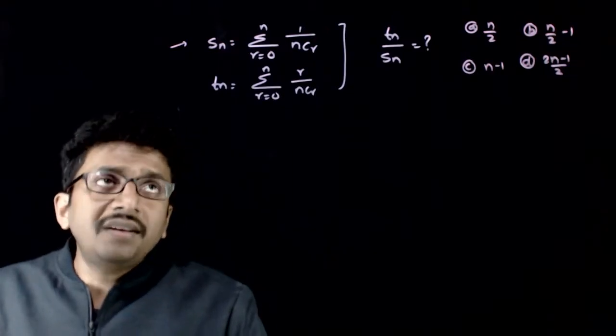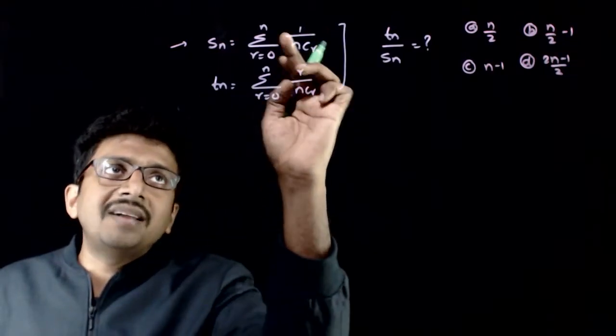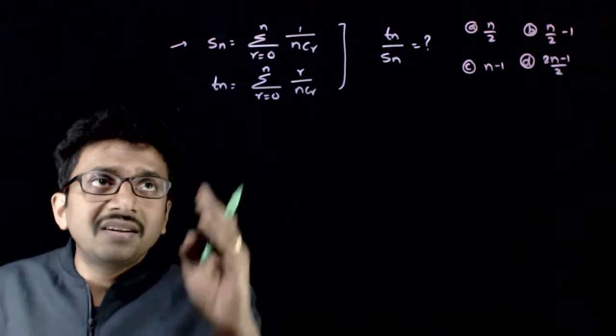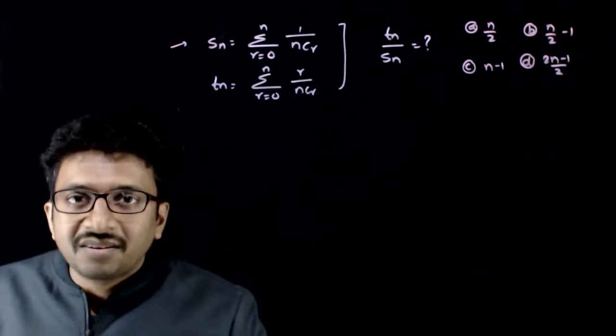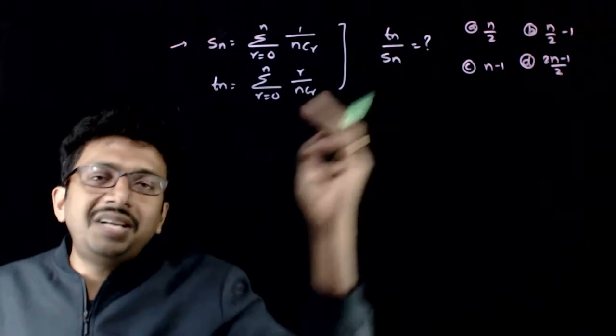Welcome students. In this question, you have given that Sn is equal to sigma r equals 0 to n, 1 by nCr, and Tn is sigma r by nCr. So what is the relation between Tn and Sn?